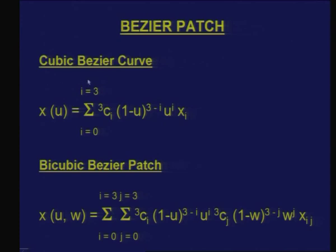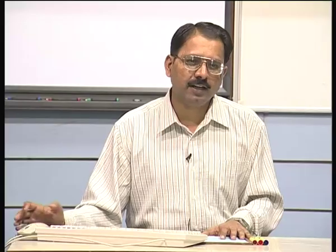Recalling the definition of a cubic Bezier curve: four control points P0, P1, P2, P3; the x-coordinate is defined by a binomial coefficient with terms (1-u)^(3-i) · u^i · x_i. Similarly for y and z. Moving to Bezier surface patches, one can define a bicubic patch (cubic in both u and w), a cubic-quartic patch, a cubic-quintic patch, or any combination. For a bicubic patch, x is a function of both u and w.